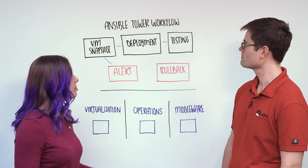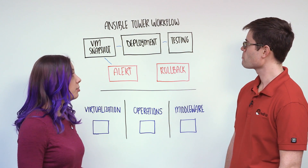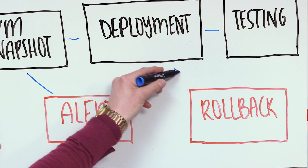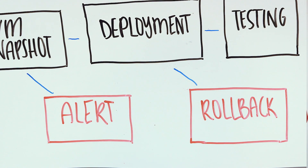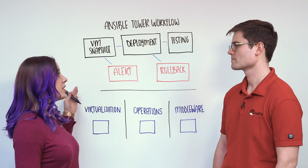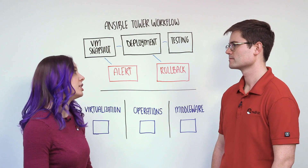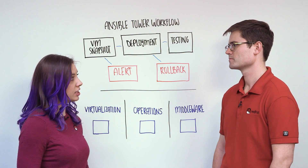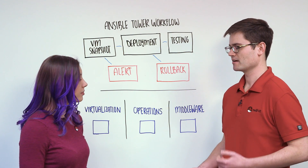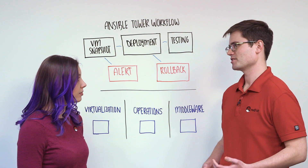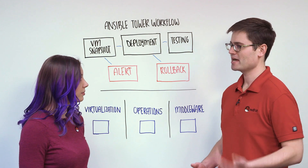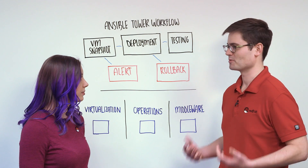Or maybe something goes wrong later on in the process, say when you're in the deployment phase. You can simply run a rollback workflow that goes back to a previous version so that the customer doesn't lose any downtime on their system. You can also automate these standard fixes that you might have to apply manually, but where the steps are well known.